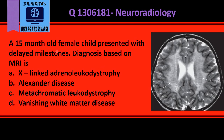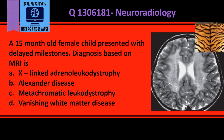A 15-month-old female child presented with delayed milestones. The diagnosis is based on MRI — this is a T2-weighted MRI where we see abnormal signal in the white matter. The pattern of abnormality shows black lines within the abnormal signal, which is similar to the Tigroid pattern, or tiger skin.